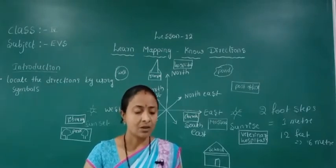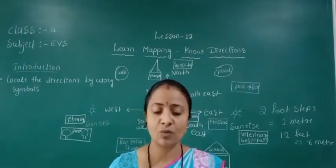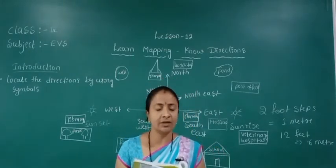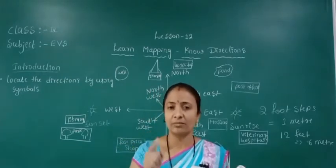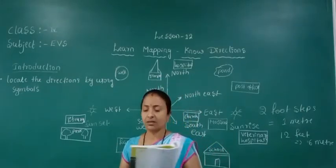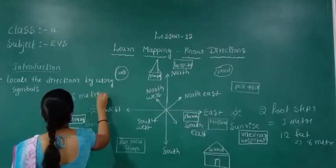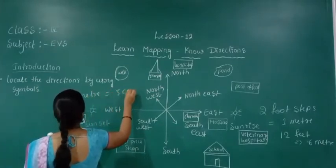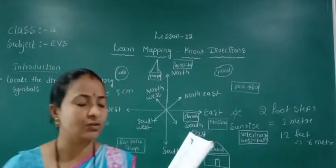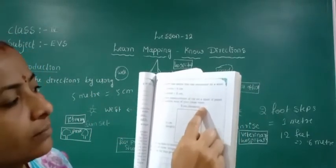Converting to scale — one meter equals one centimeter. So 6 meters equals 6 centimeters and 5 meters equals 5 centimeters. On a sheet of paper, the length is 6 centimeters and breadth is 5 centimeters.